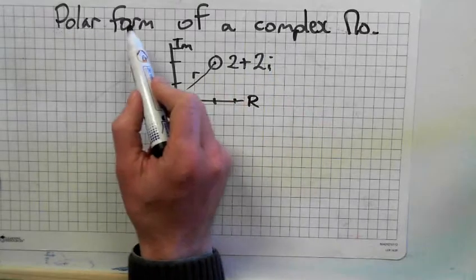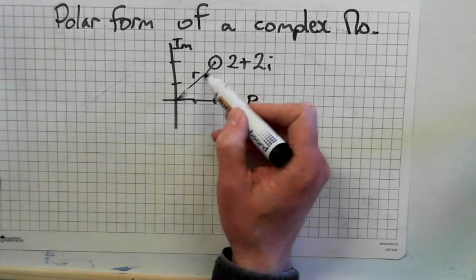This is a complex number and it's derived in the polar form. First of all you have to calculate that distance.